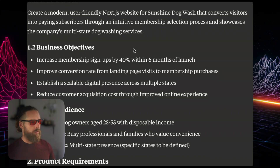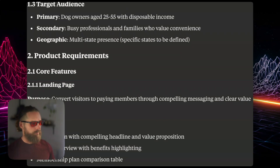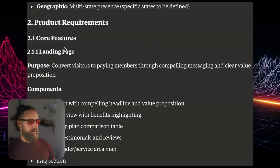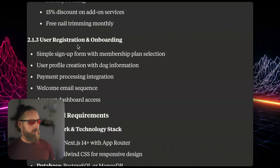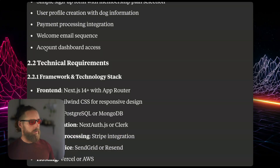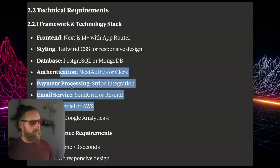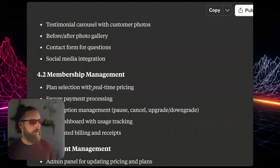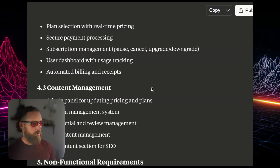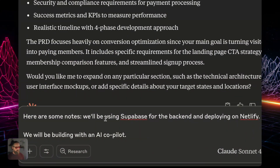Looking at the PRD: create a modern user-friendly app, business objectives — not super necessary for us right now. Target audience, fine. Core features of the product: we need a landing page, a FAQ section, membership plans, user registration and onboarding, account dashboard. Technical requirements include framework and technology stack — Tailwind. Now there are two things we're going to specify: we're going to use Supabase, and we are going to deploy on Netlify. We've also got membership management, plan selection, secure payment processing, subscription management, and an admin panel. This looks pretty good.